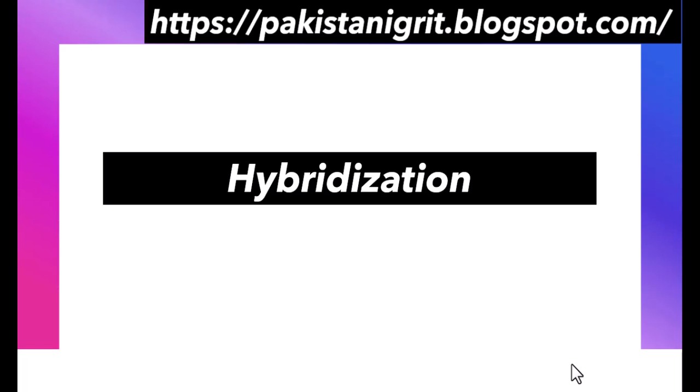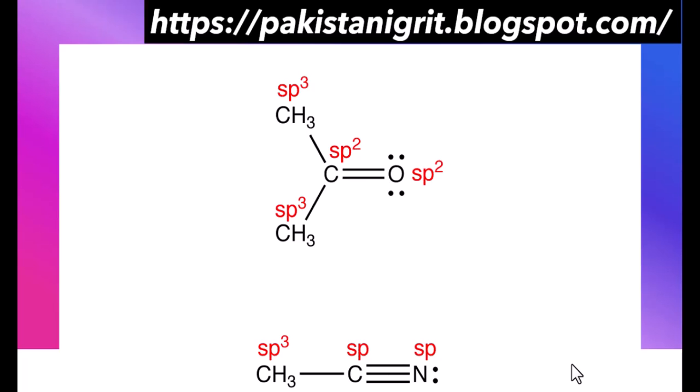Hello everyone, I am Omer. In today's video we will discuss some tricks about hybridization. First, what is hybridization? Hybridization is actually the mixing of two or more orbitals to form new orbitals. Here are some examples of hybridization — some atoms have sp2 hybridization, some have sp3, and some have sp hybridization.